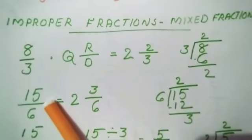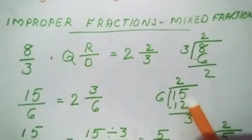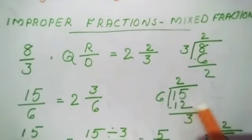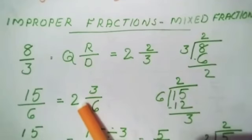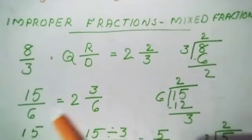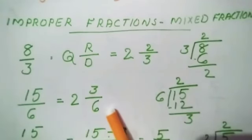Another example: 15/6. Divide 15 by 6. 6 × 2 = 12, so 15 − 12 = 3. The quotient is 2 and the remainder is 3. The denominator stays the same as the divisor, which is 6. So the mixed fraction is 2 and 3/6.